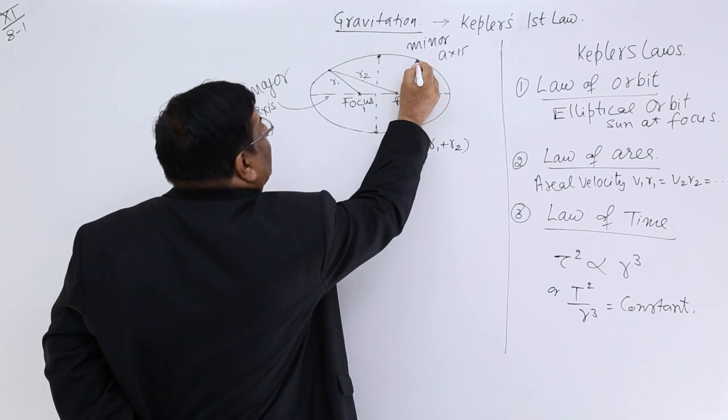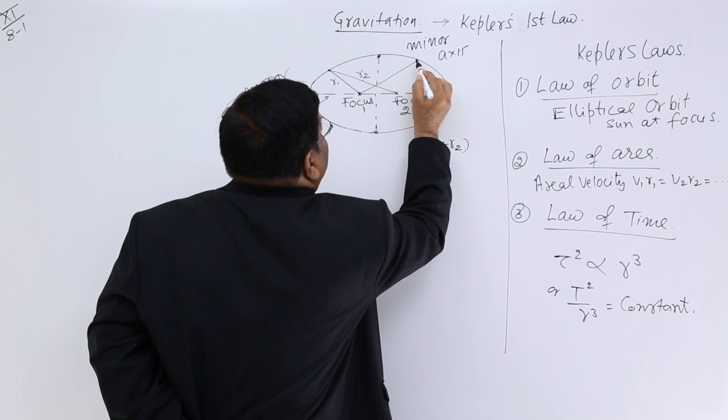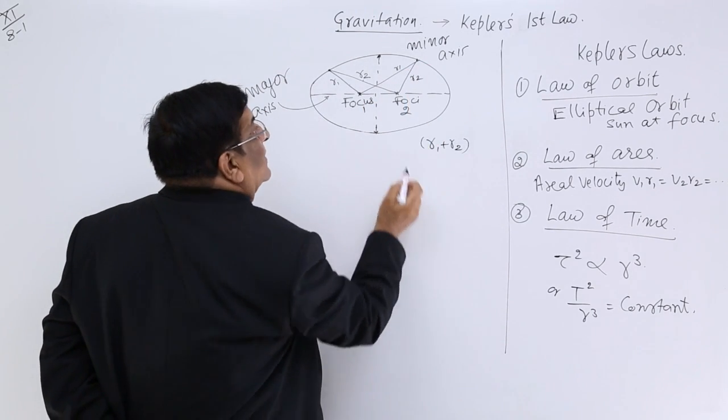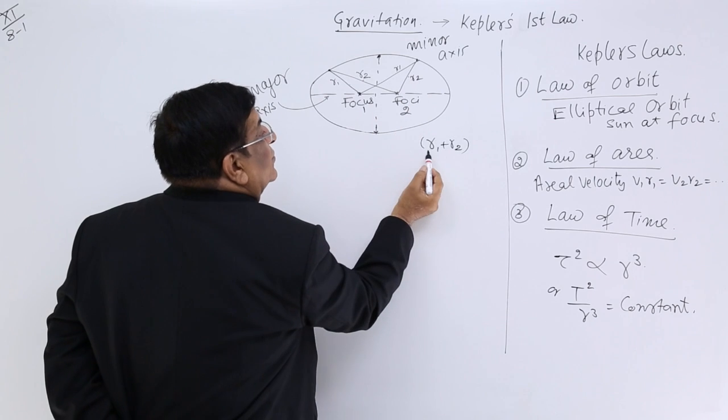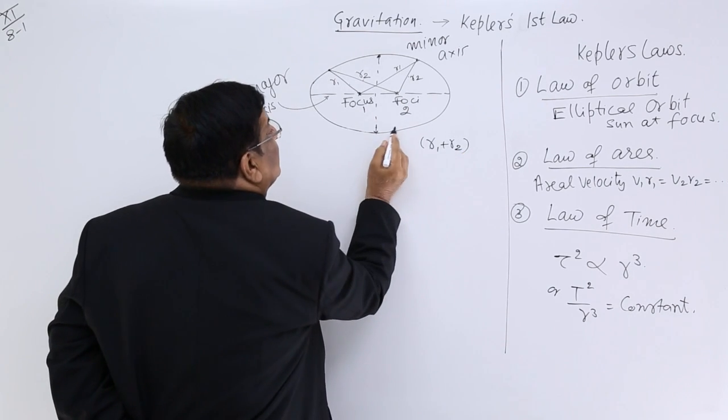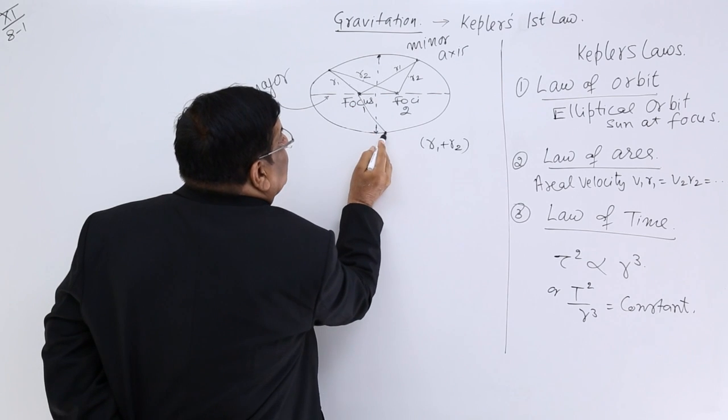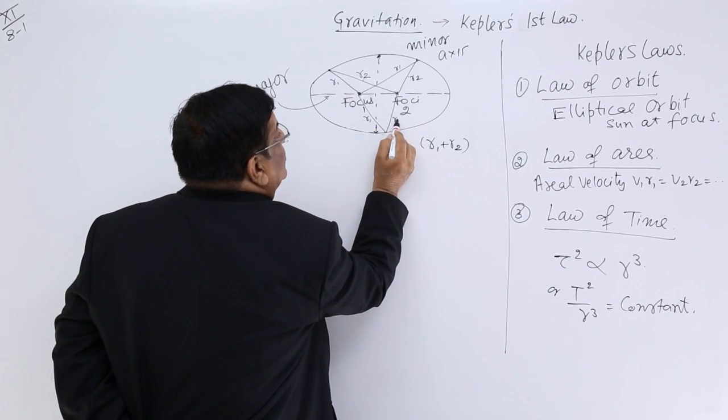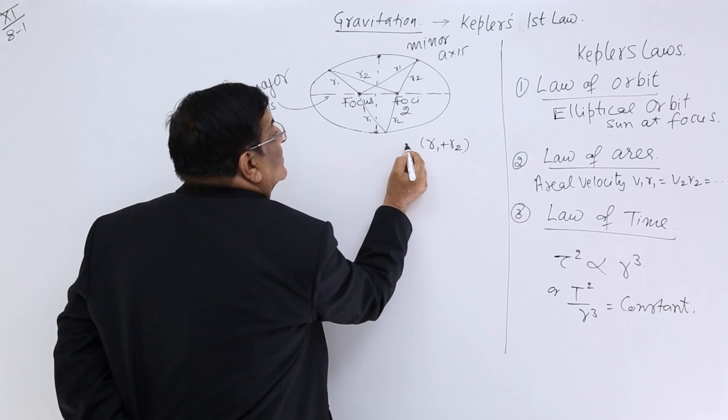If you change this position here, then again this is r1 and this is r2. Again you add them up, you get the same amount. If it is here, add the two. The sum r1 plus r2 always remains constant.